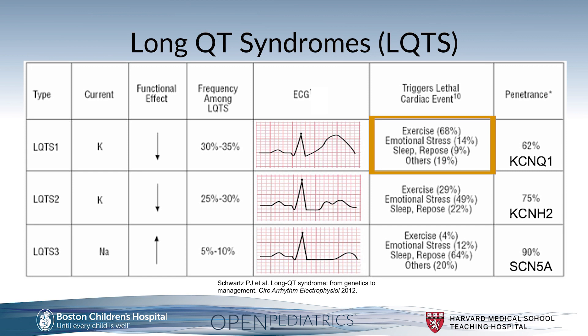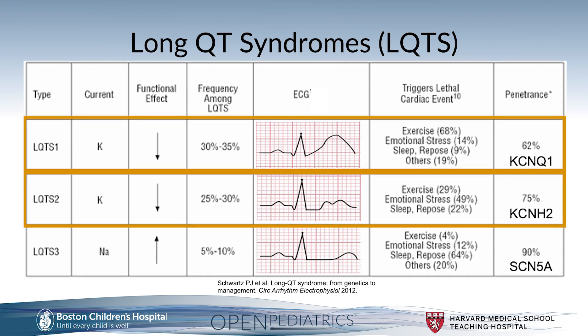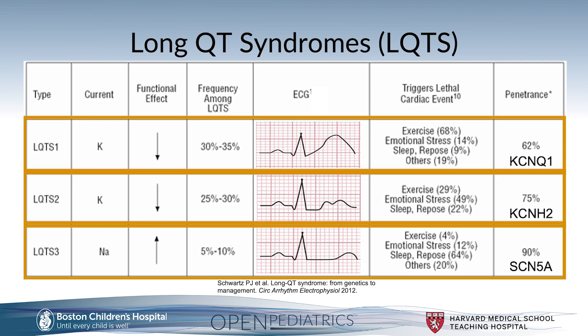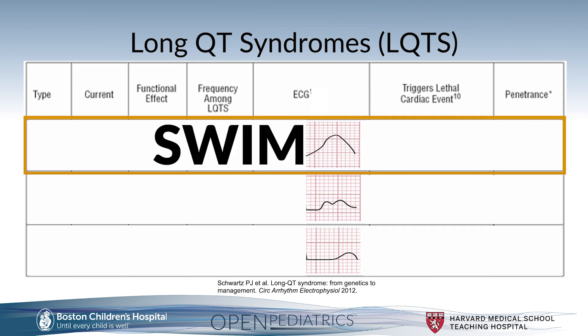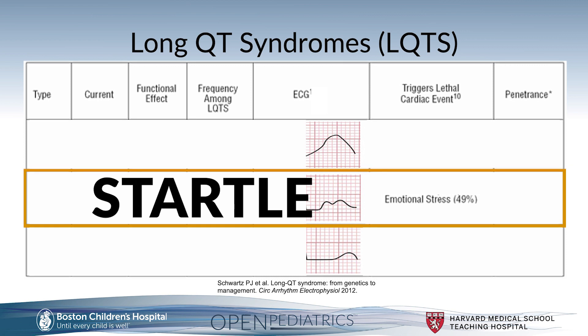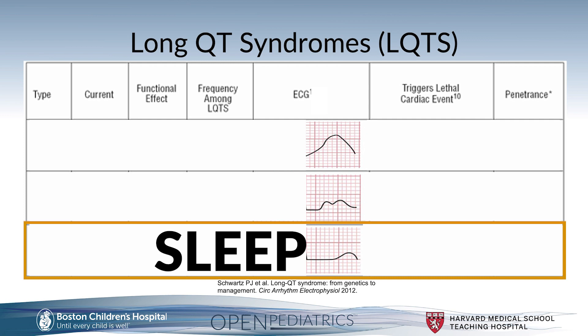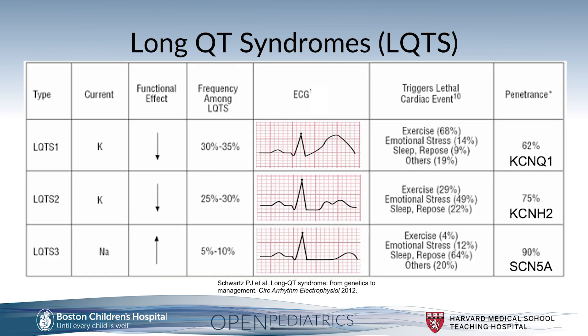For type 1, it's important to note that although exercise in general is a common trigger, swimming in particular tends to be a more common triggering event for cardiac events in this population. A useful mnemonic to remember the most common triggers for life-threatening events in long QT types 1, 2, and 3 are the words swim, startle, and sleep: swim or exercise for type 1, startle or emotional stress responses for type 2, and sleep or high periods of vagal tone for type 3.